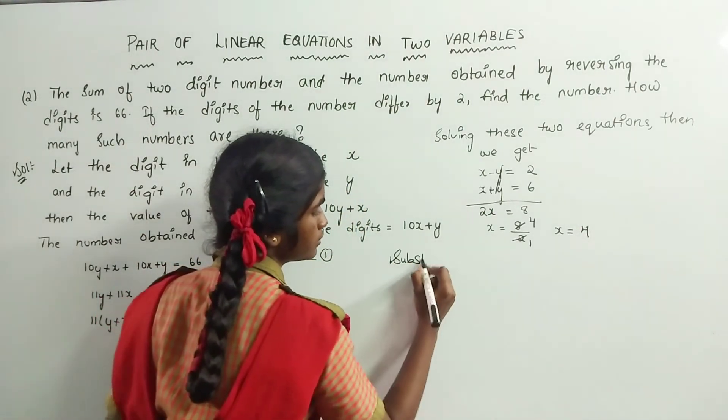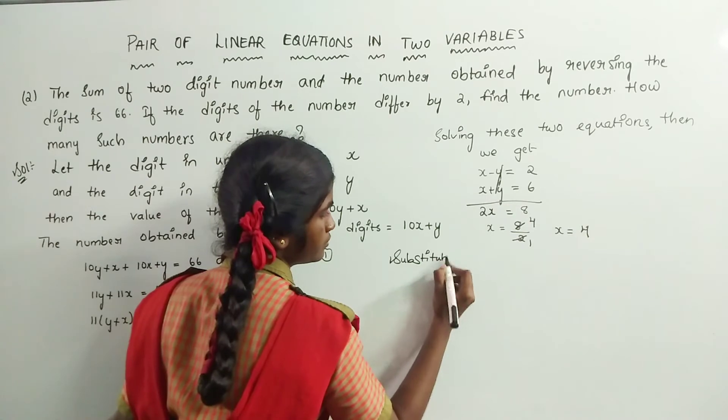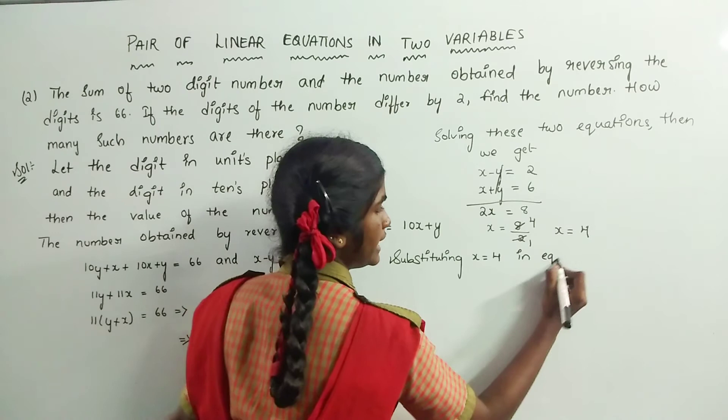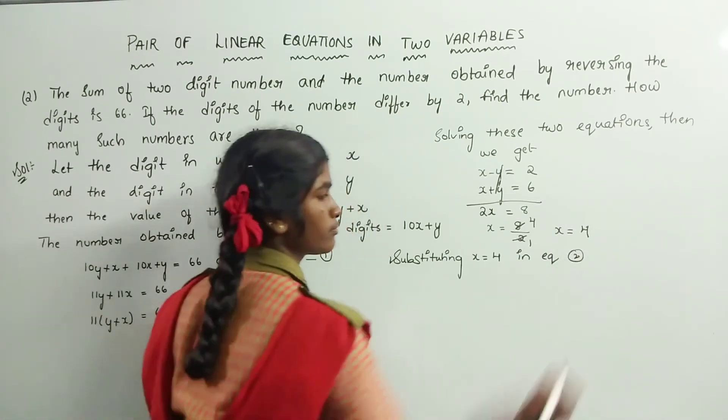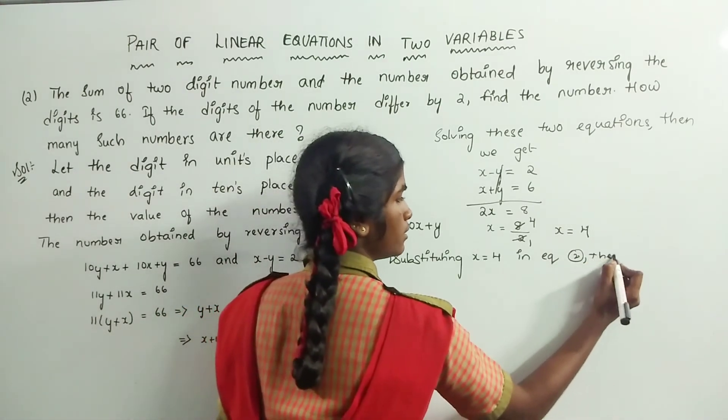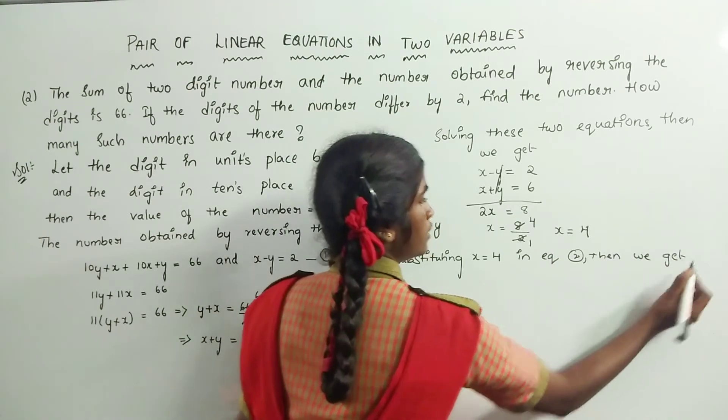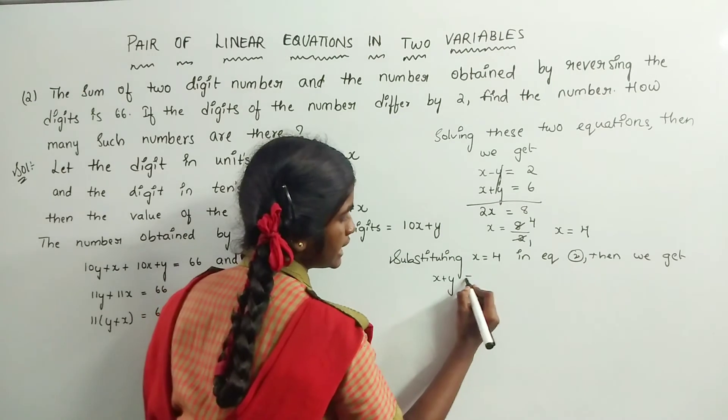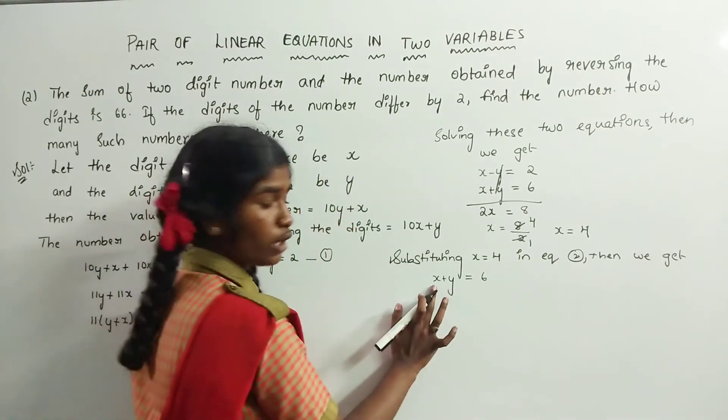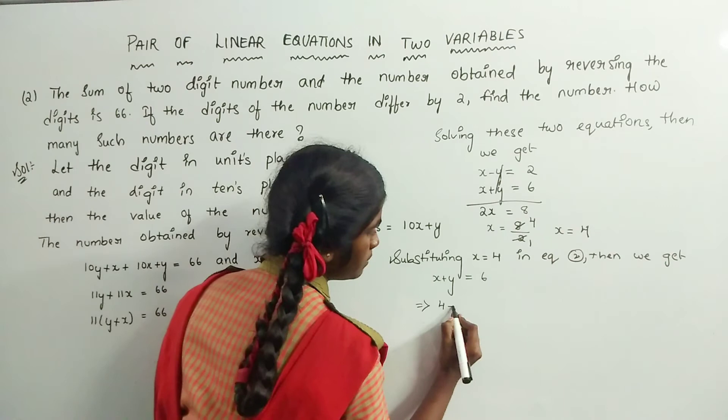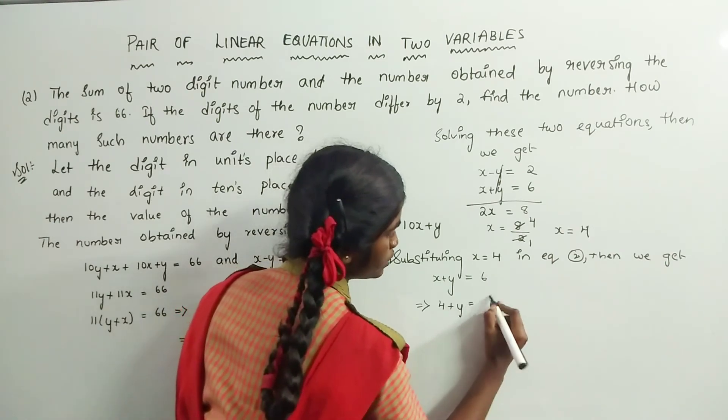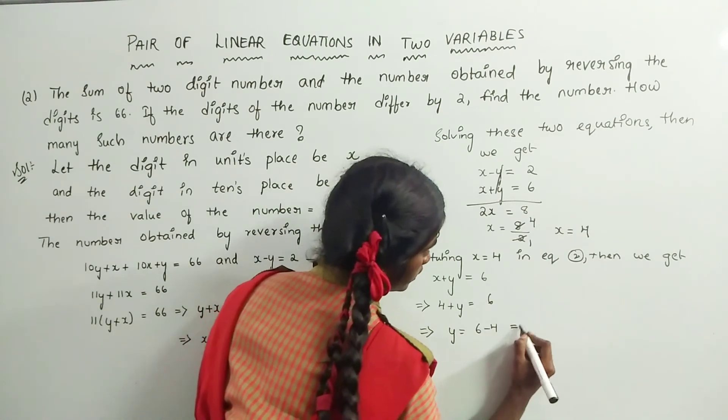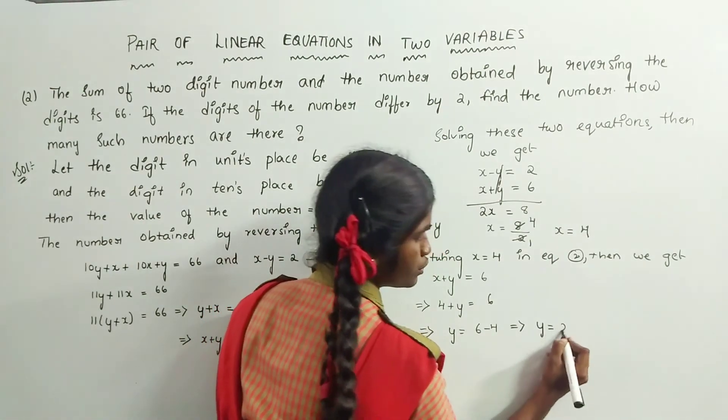Substituting x equals 4 in equation 2: x plus y equals 6. That implies 4 plus y equals 6, so y equals 6 minus 4, which equals 2.